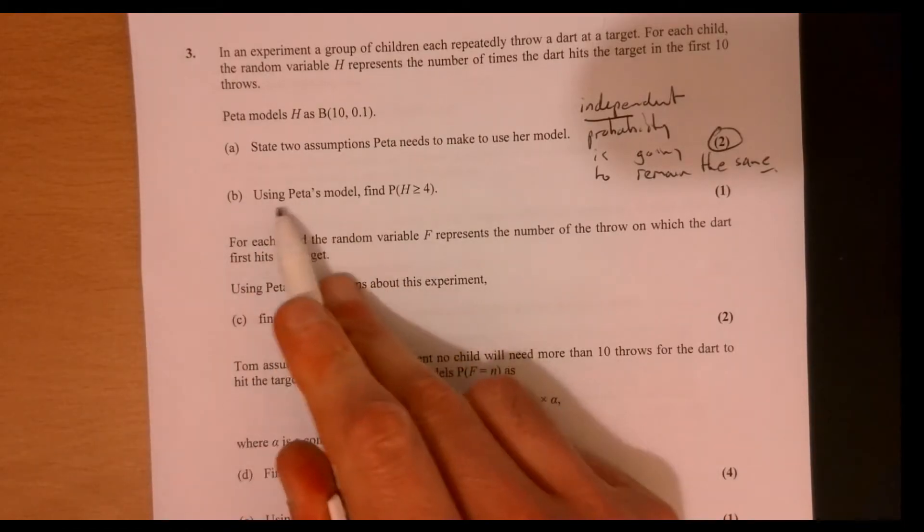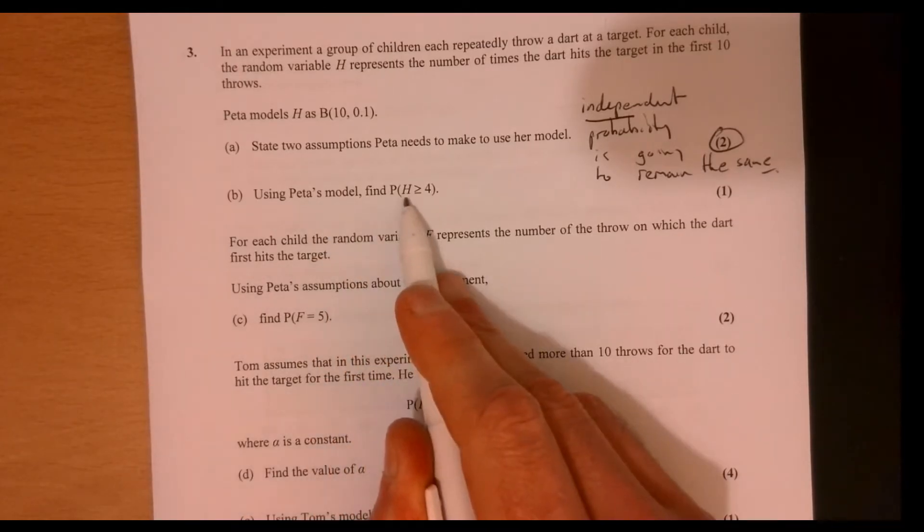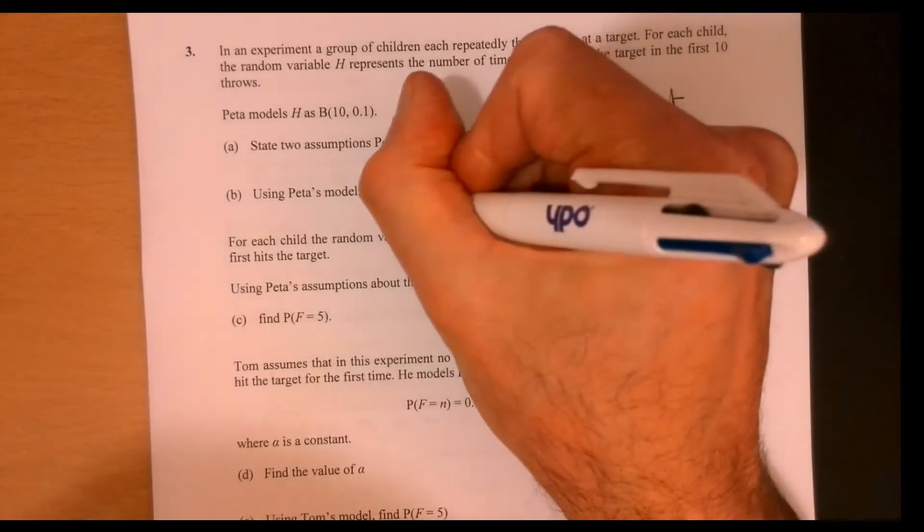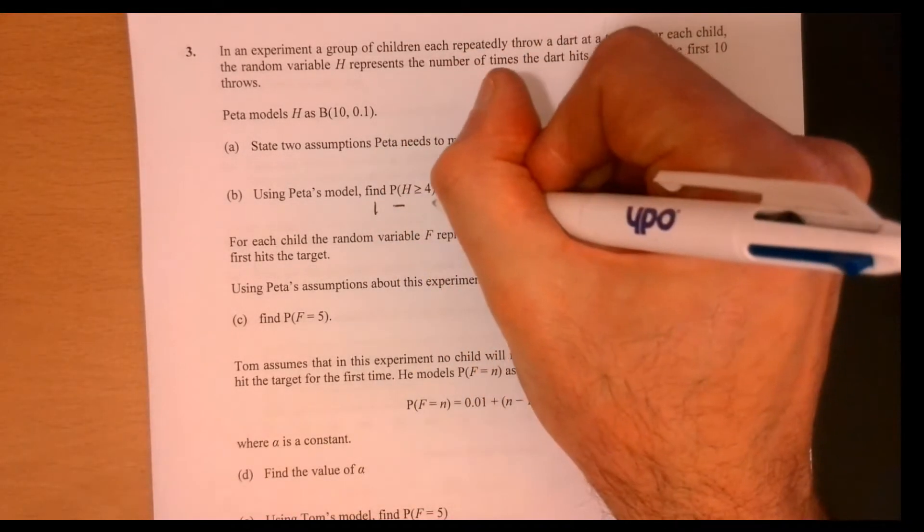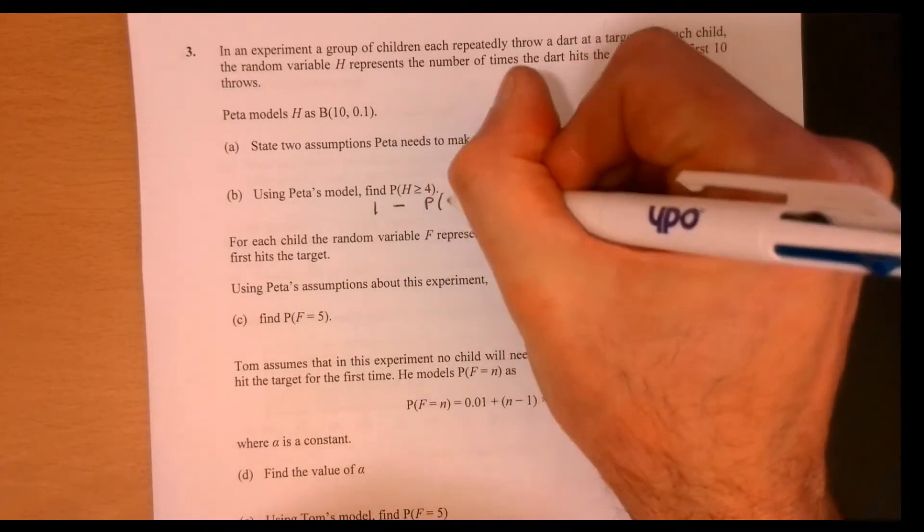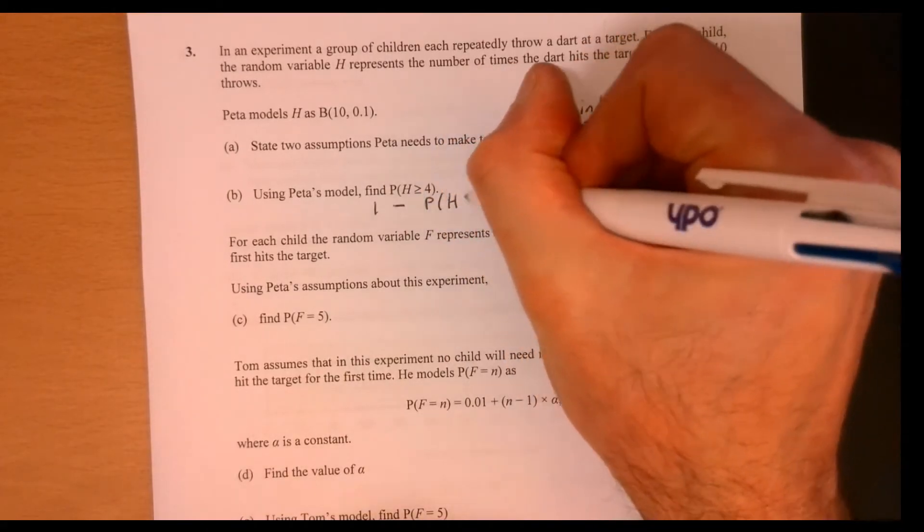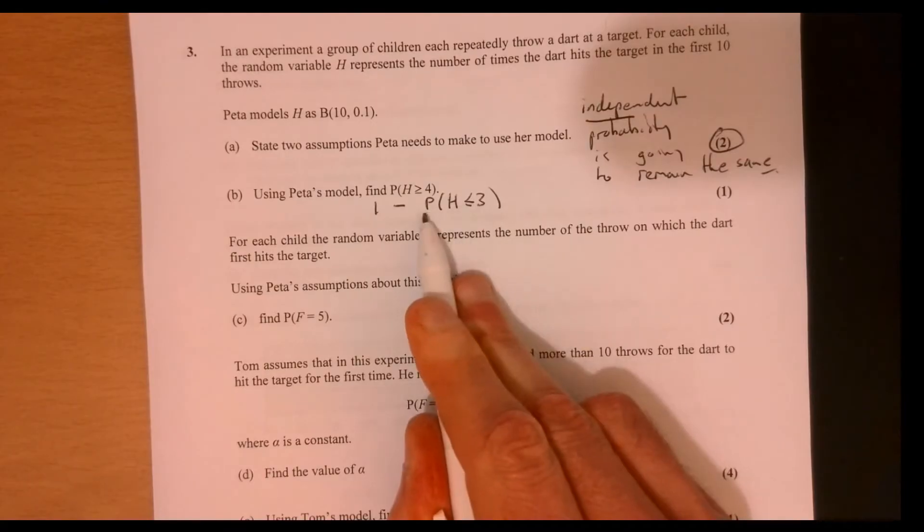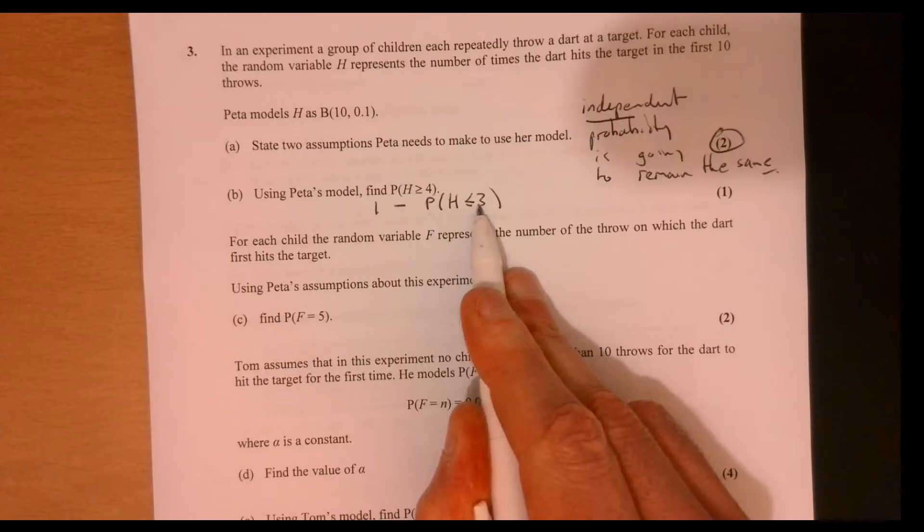Part B. Using Petra's model, find the probability that H is more than or equal to four. Well, the easiest way to do this is one minus. Now, this is really where your calculator comes into its own. And it's much easier to do this if you do the cumulative value.